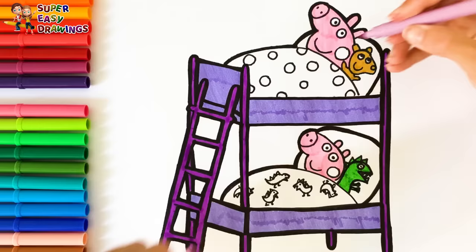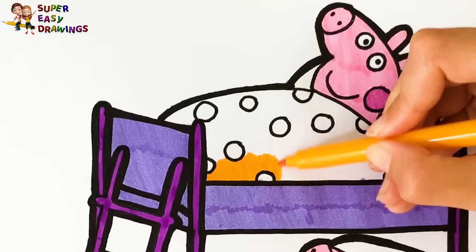Put a darker pink on their cheeks. Okay, now I color their blankets. I'll start with Peppa's. And I'm going to use this bright yellow that reminds me of the color of the sun.